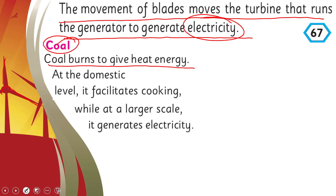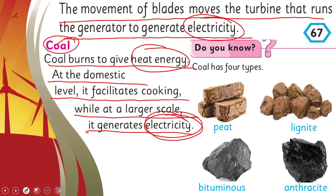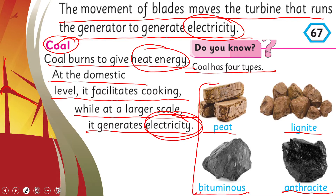Coal burns to give heat energy. At the domestic level it facilitates cooking, while at a larger scale it generates electricity. Coal has four types: peat, lignite, bituminous, and anthracite. These are the four forms in which coal is found.